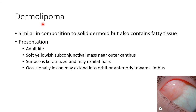Dermolipoma is similar in composition to solid dermoid but also contains fatty tissue. It usually presents in adult life as a soft, yellowish subconjunctival mass near the outer canthus. The surface is keratinized and may exhibit hairs. Occasionally the lesion may extend into the orbit or anteriorly towards the limbus.